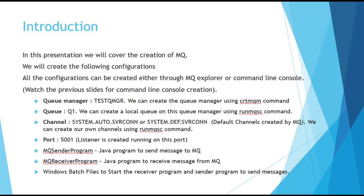For the purpose of our programming, we are going to have a queue manager called TestQMGR. We are going to have a queue called queue1. We are going to use default channels like SYSTEM.AUTO.SVRCONN or SYSTEM.DEF.SVRCONN. These are the default channels which are created when you create a queue manager, either by using the command line or by using MQ Explorer. We will use a port called 5001.